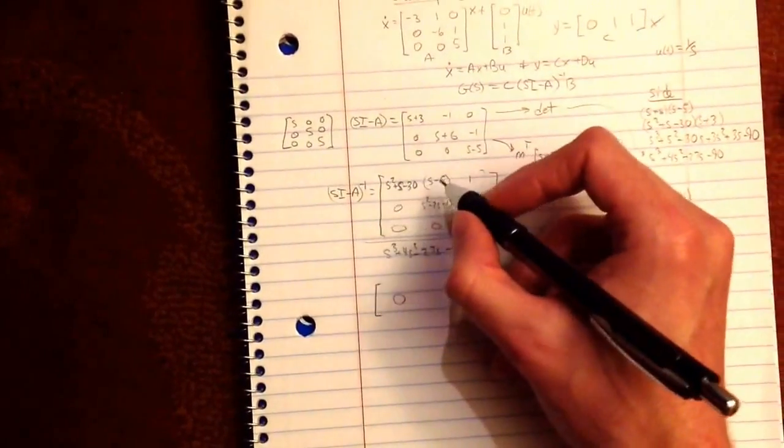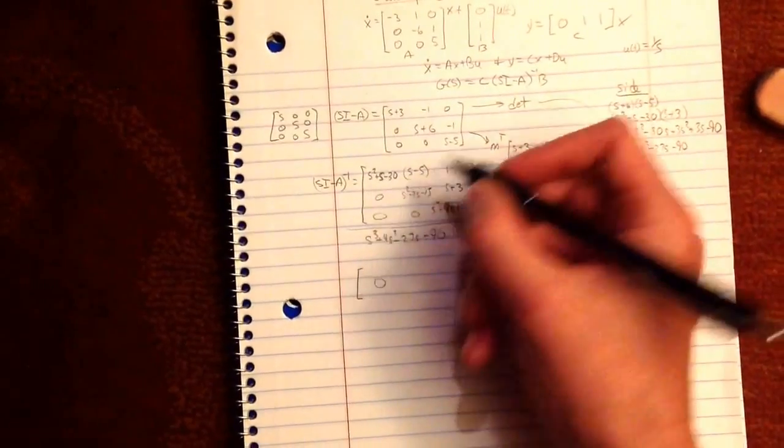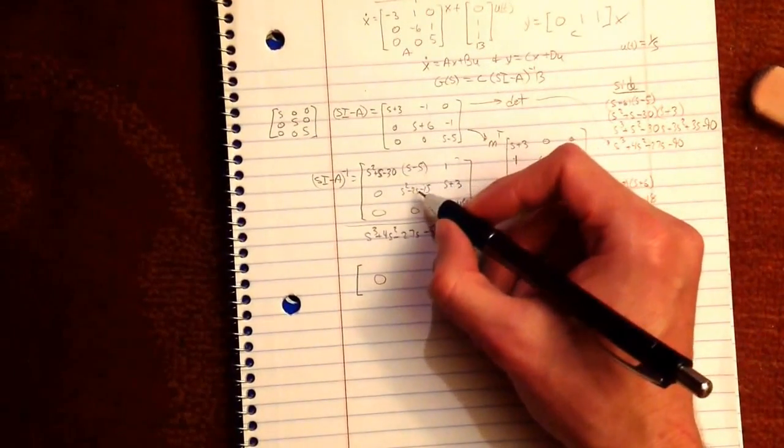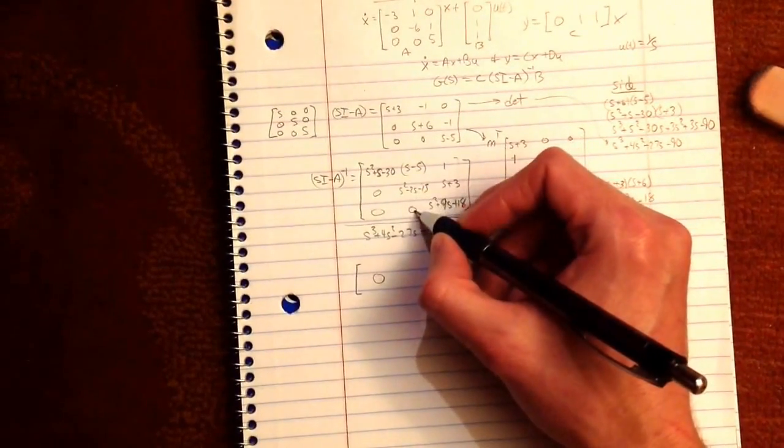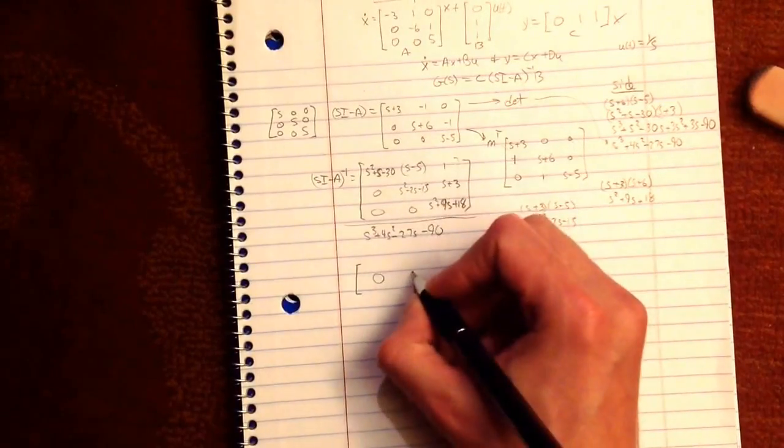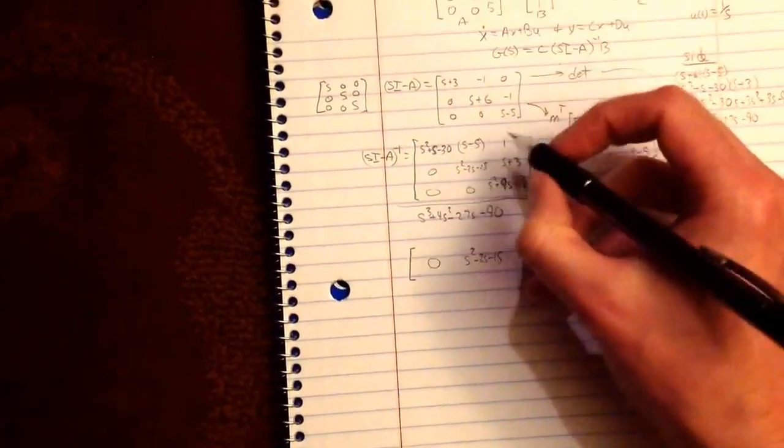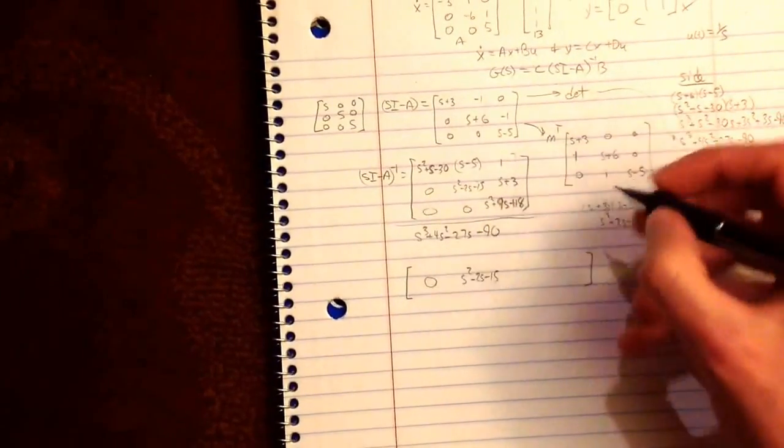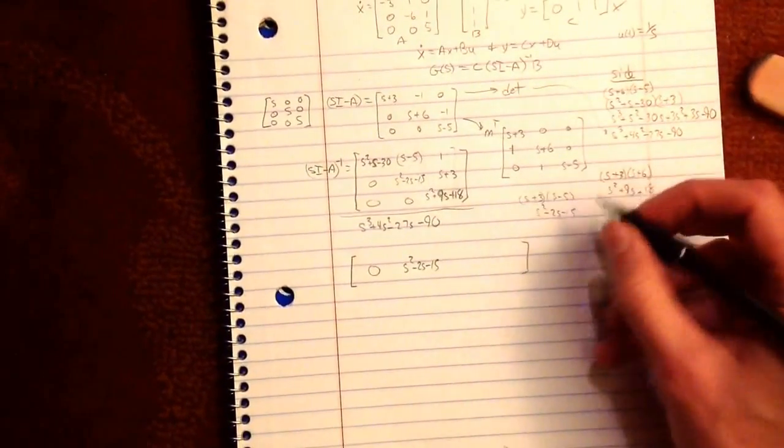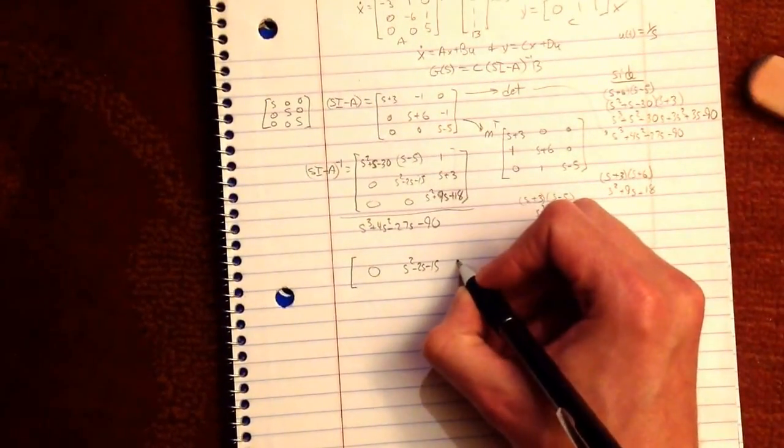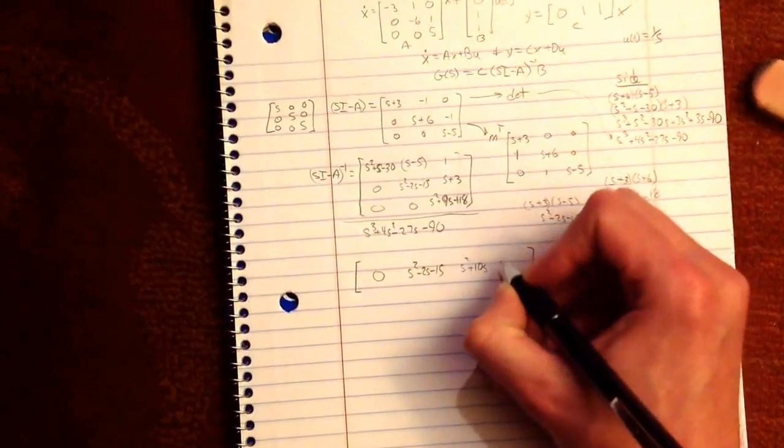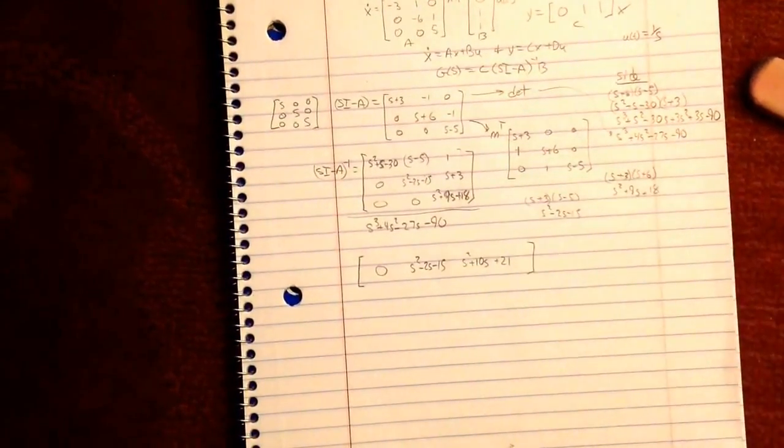Now do it for the next one. So you've got 0, 1, 0. So it's just this. Last one. 0, 1, that. These two have to be added together. All right. What's that? That's S squared plus 10S plus 21. Okay.